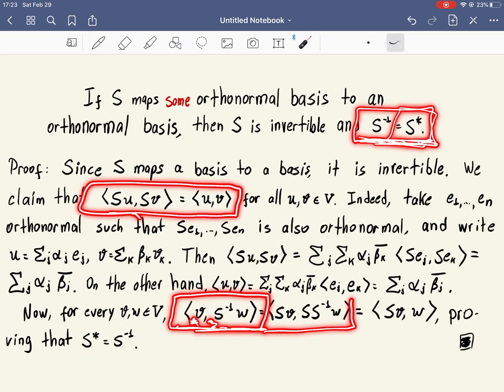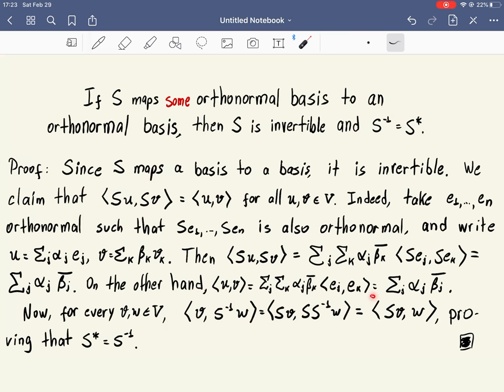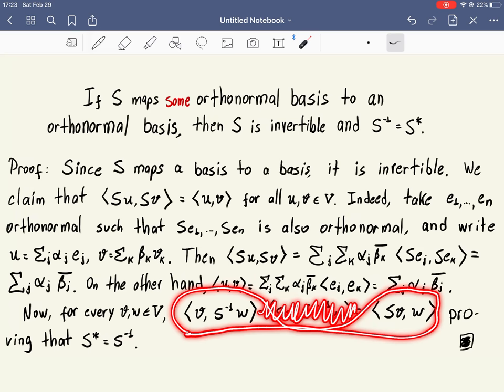So this becomes SV, SS inverse W. Of course, S times S inverse is the identity, so this is SV, W. And again, if we look at this equals this for every V and every W, this is exactly the definition of this being the adjoint. So S star equals S inverse.